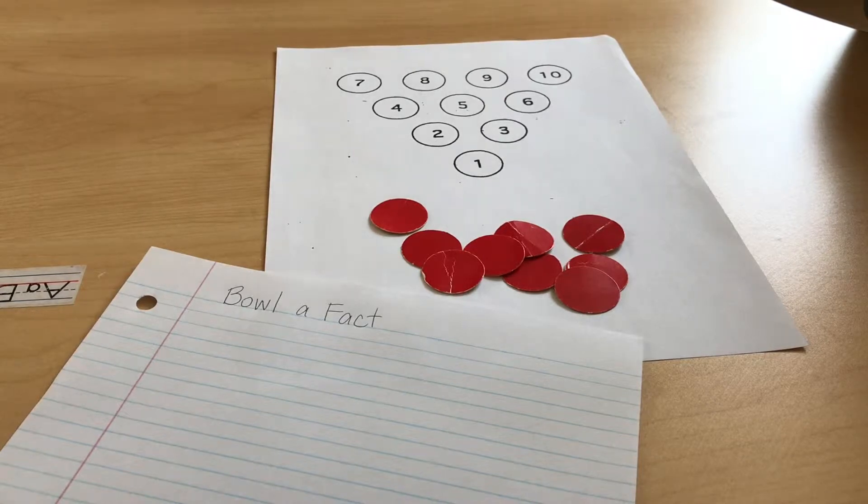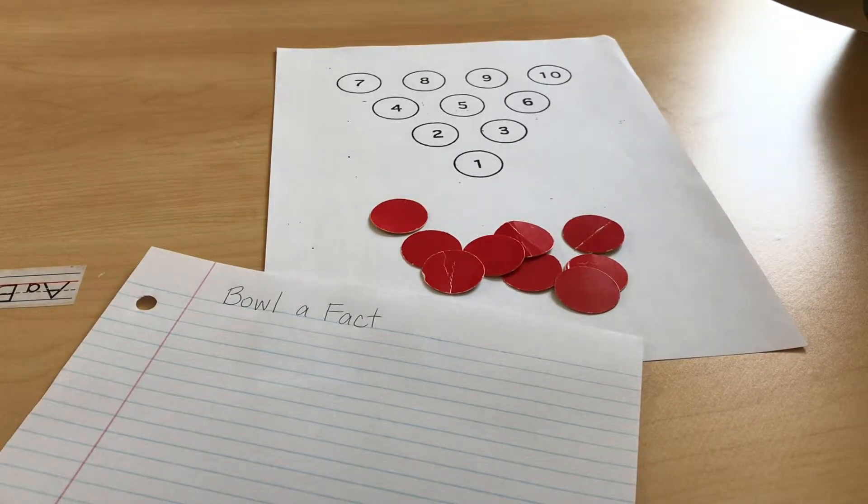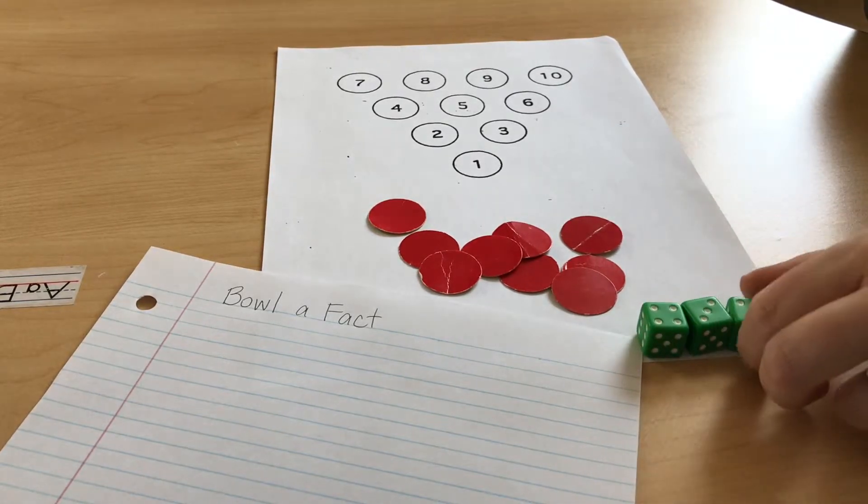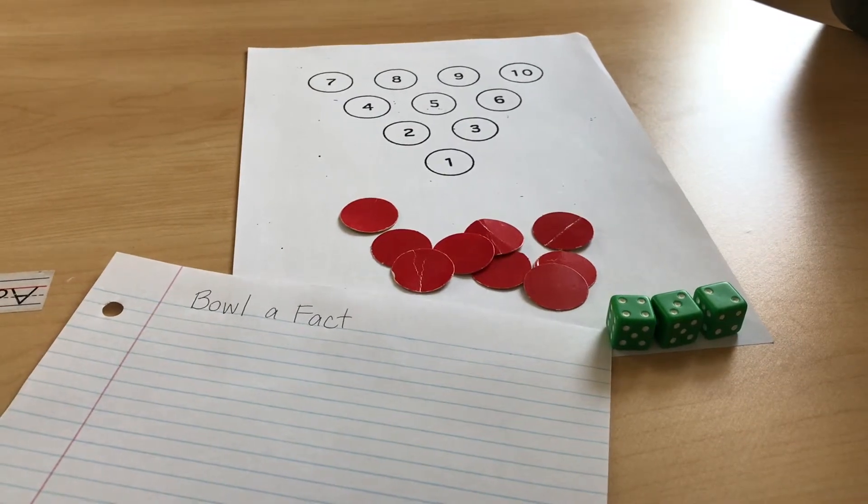The way we're going to do this is roll the three dice. Roll, trap, reveal. So I have a four, a three, and a two.